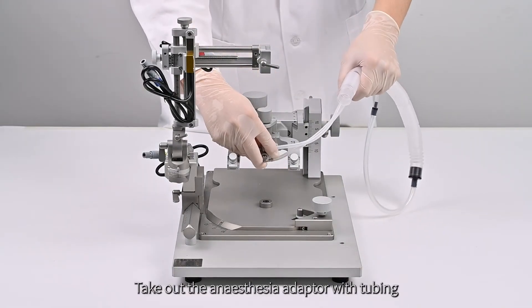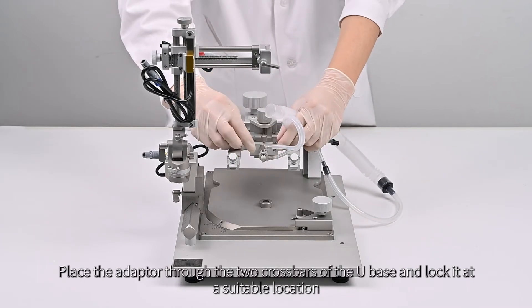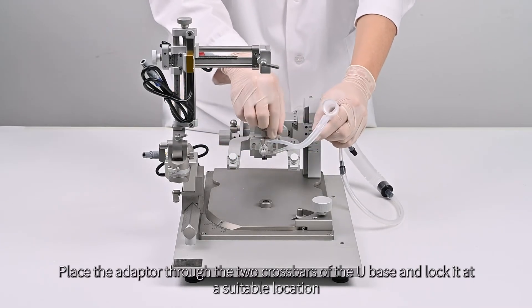Take out the anesthesia adapter with tubing. Place the adapter through the two crossbars of the U-base, and lock it at a suitable location.